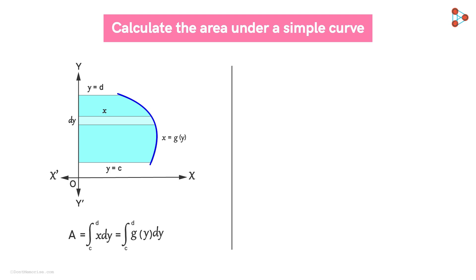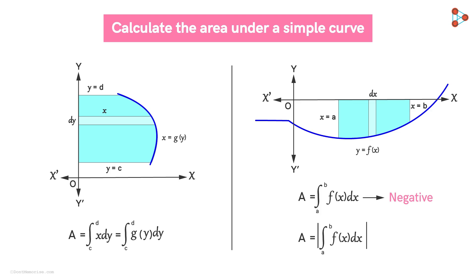Now if the curve under consideration is below the X axis and F of X is negative, then the area bounded by the curve, X axis and the coordinates X equal to A, X equal to B will come out to be negative. In such a case, we will consider only the numerical value of the area. So that is how we calculate the area under a simple curve.